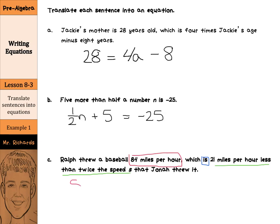The 'is' is going to be our keyword for the equal sign. Now, 21 miles per hour less than twice the speed — let's do twice the speed first, that's going to be 2S. We need to think about whether this is 21 minus 2S or 2S minus 21, since 'less' means subtracting. Which makes the most sense? Twice the speed, and 21 less than that — so it's 2S minus 21. So to rewrite that: 84 equals 2S minus 21.